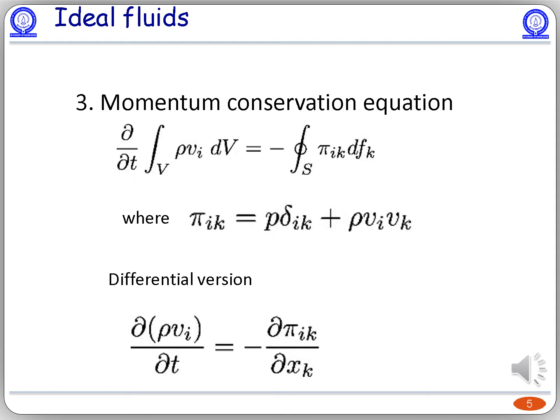One can write the momentum conservation equation in terms of the continuity equation as shown in the slide. Here pi_ik on the right-hand side is the momentum flux density tensor, which is equal to p delta_ik plus rho v_i v_k, where v_i and v_k are the velocities in the ith and kth direction. The equation can be interpreted as the ith component of momentum of fluid contained in a volume equals the ith component of momentum flowing out through the enclosing surface. Using Stokes' theorem, we can write the differential version: del/del t of rho v_i equals the divergence of the momentum flux density tensor, with a negative sign.